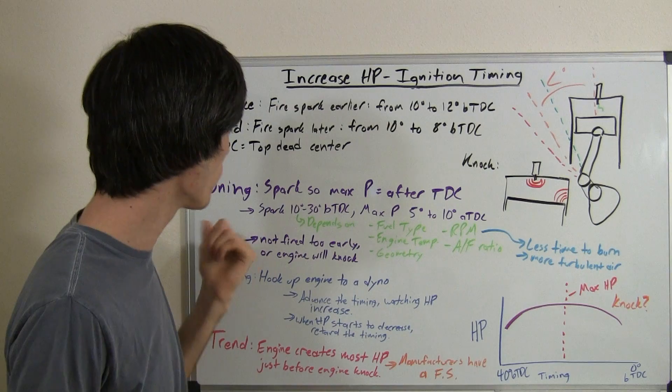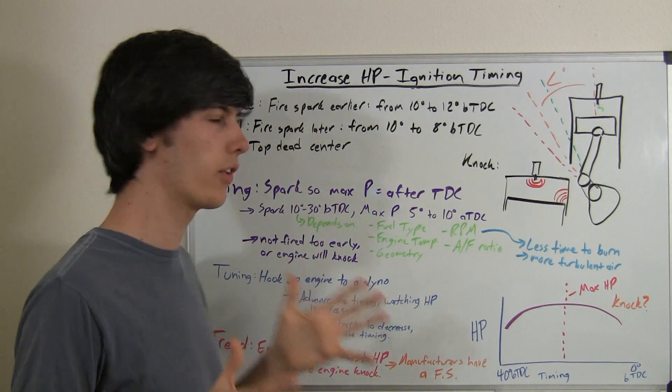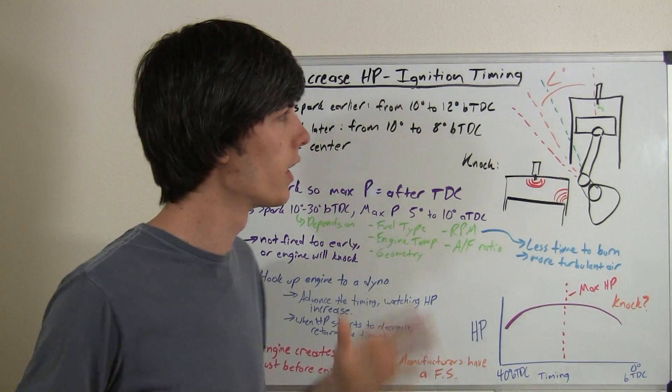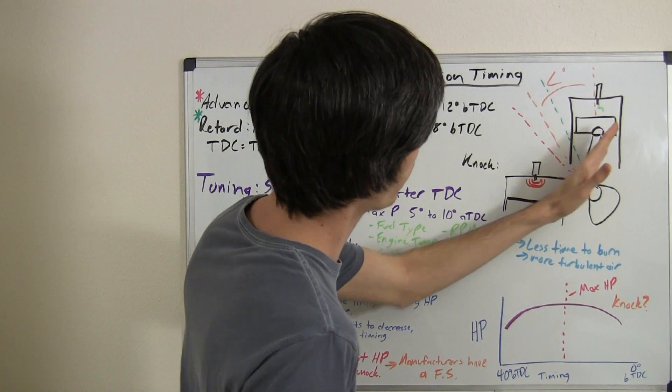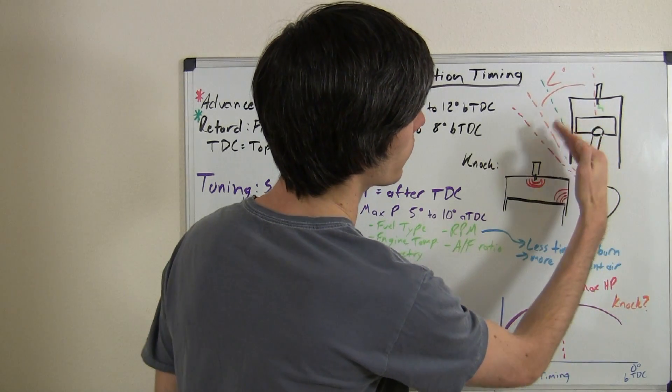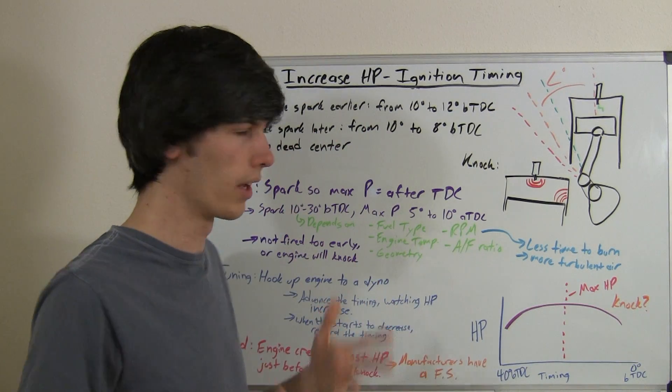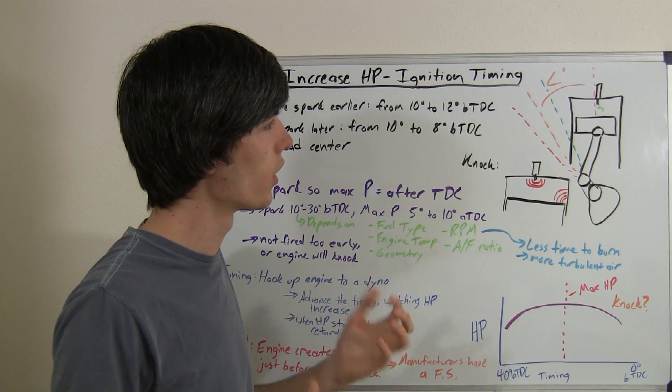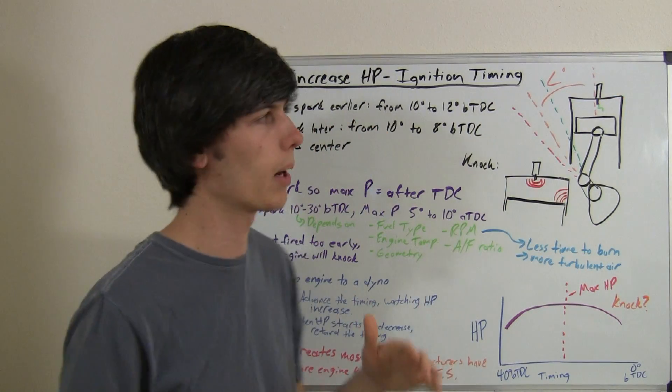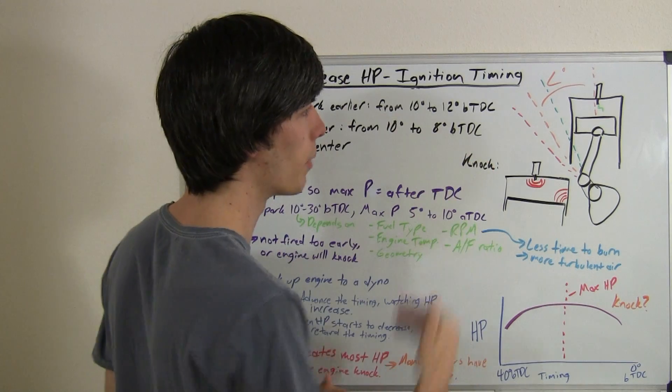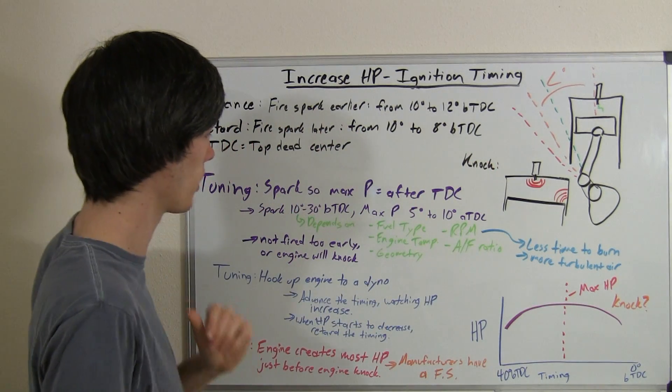So when you're tuning this, basically there's several things you want to keep in mind. You want the spark to fire so that your maximum pressure is created after the crankshaft has passed over and you've reached top dead center and then your piston is coming back down. That's when you want your maximum pressure to occur. That's pretty obvious, because you want your maximum force to occur pushing it down once it's in the proper stroke, actually moving down rather than moving up. You don't want to have a great force while it's moving up; you're just going to be wasting power.